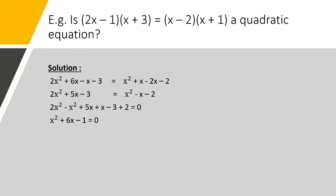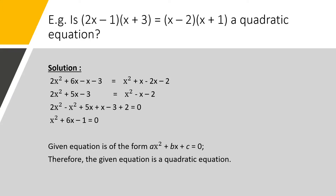Let us transpose the LHS terms towards the RHS. We get 2x squared minus x squared plus 5x plus x minus 3 plus 2 equal to 0, which simplifies to x squared plus 6x minus 1 equal to 0. The given equation is of the form ax squared plus bx plus c equal to 0. Therefore, the given equation is a quadratic equation.